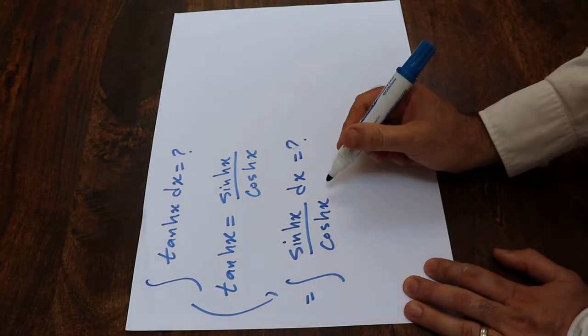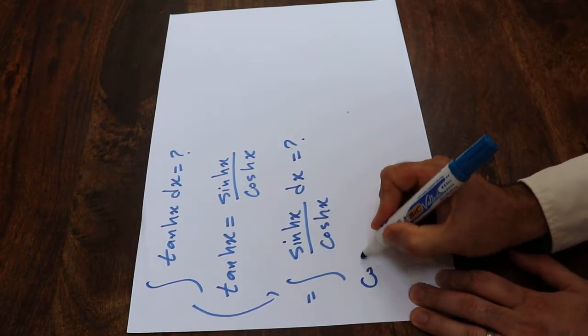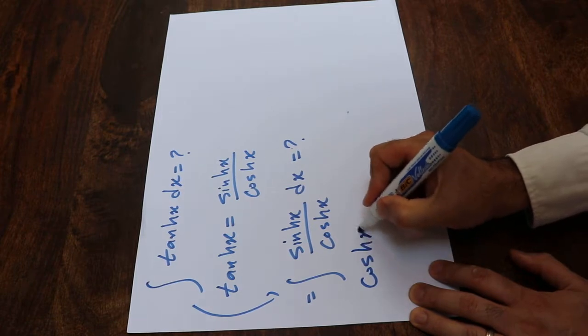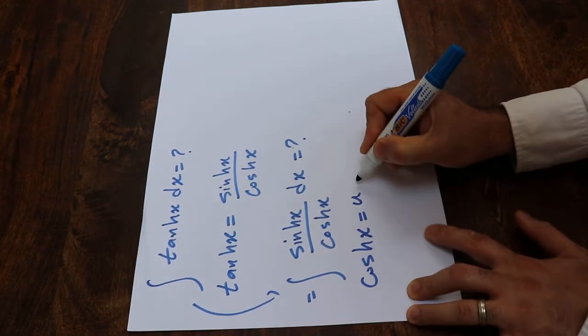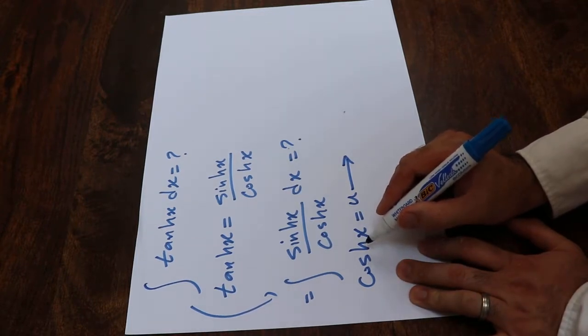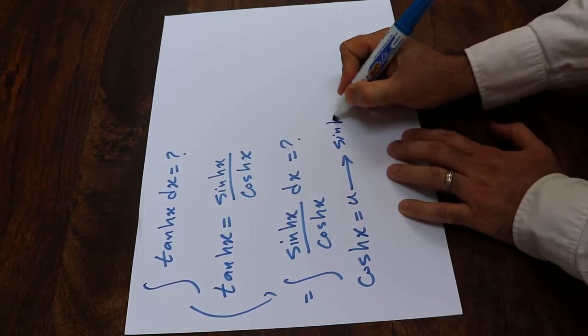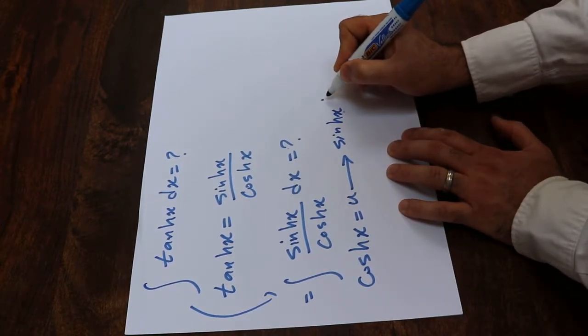You can solve this integral using the substitution rule. If you define hyperbolic cosine x as u, and take the derivative from each side of this equation, the derivative of hyperbolic cosine x is equal to hyperbolic sine x dx.